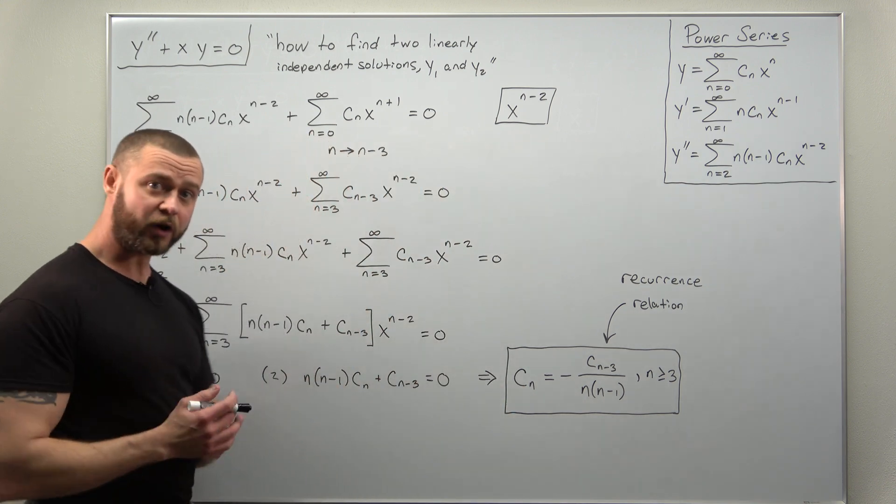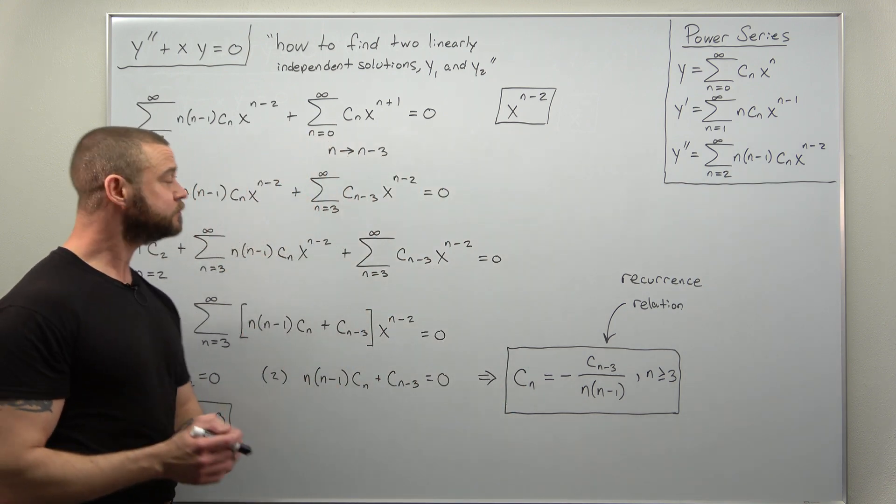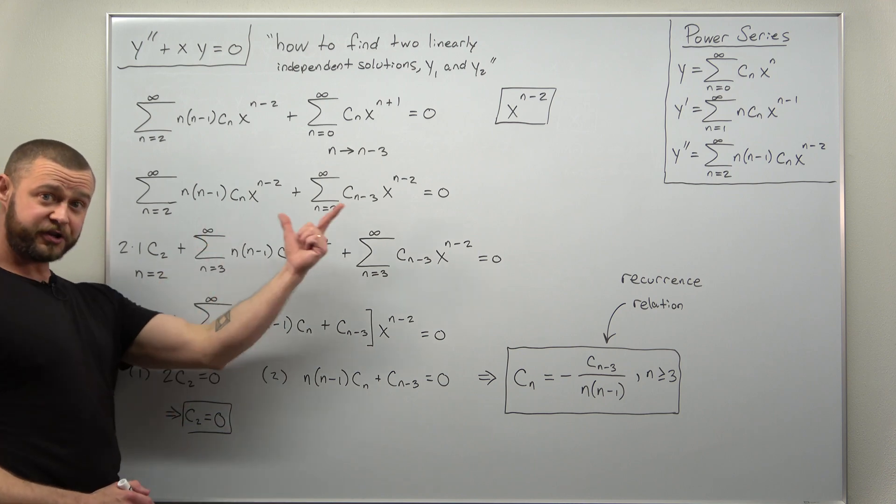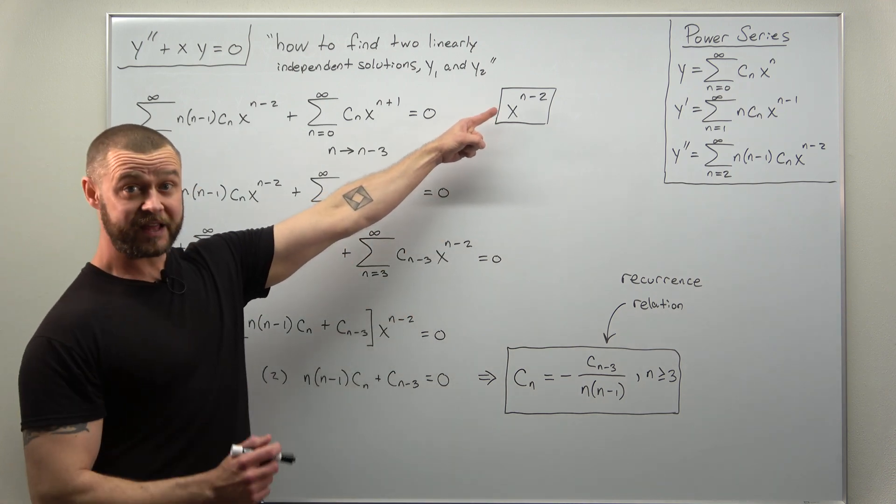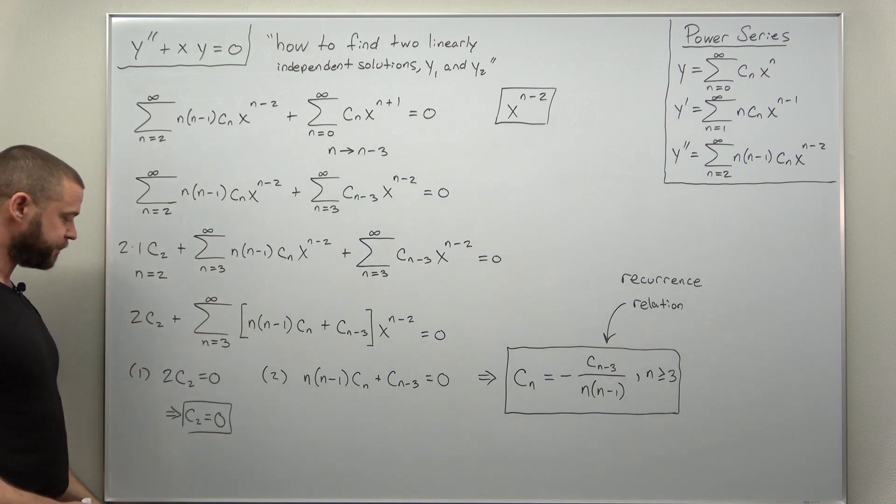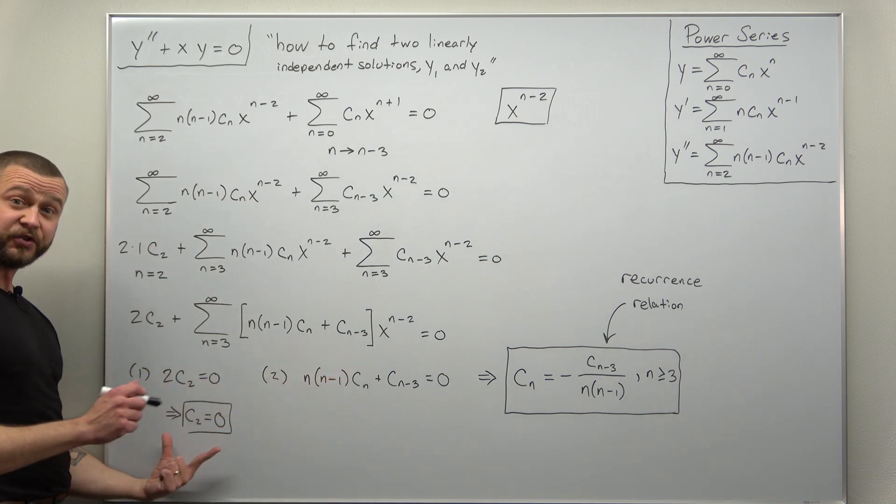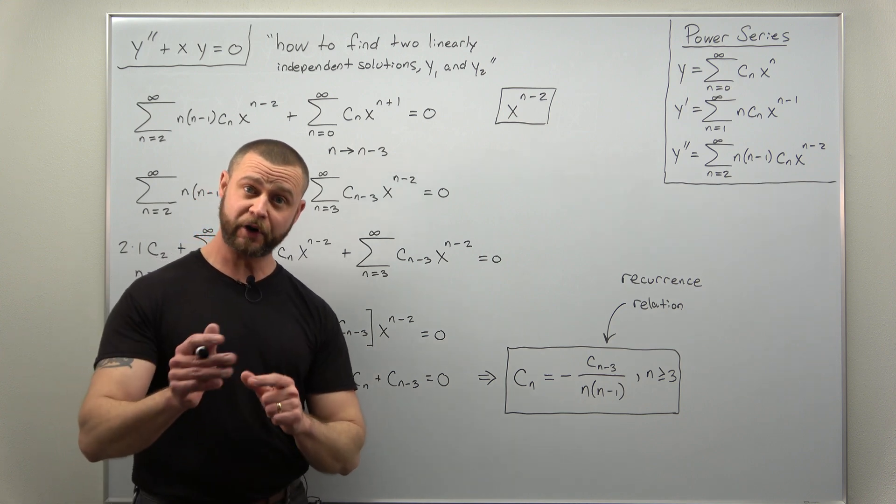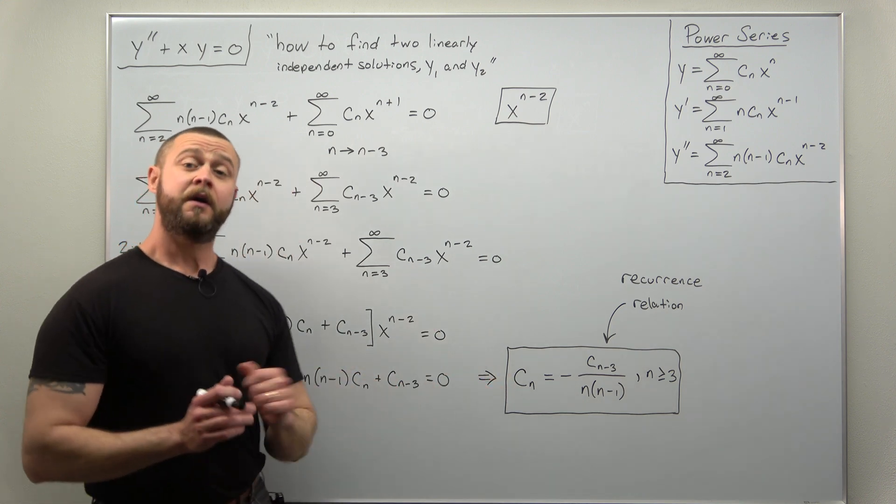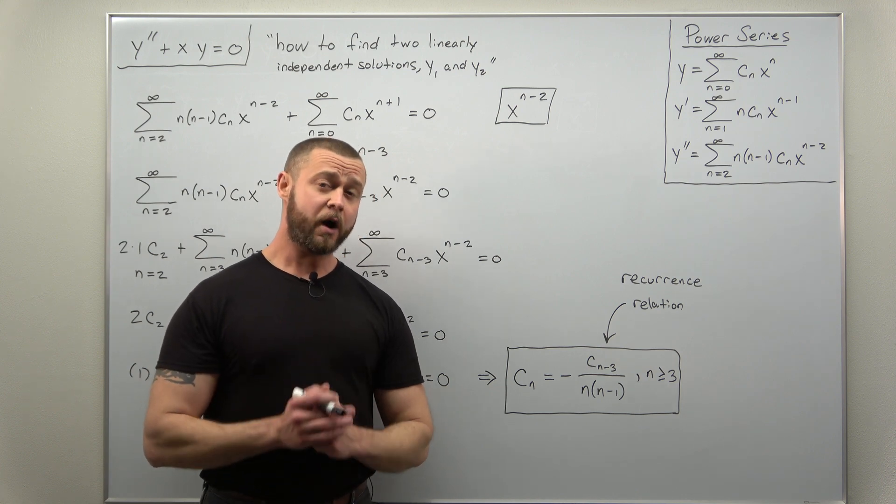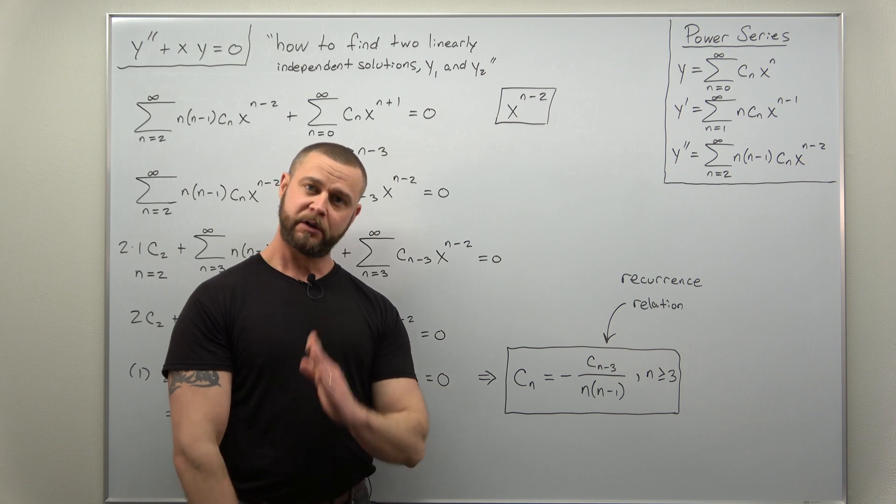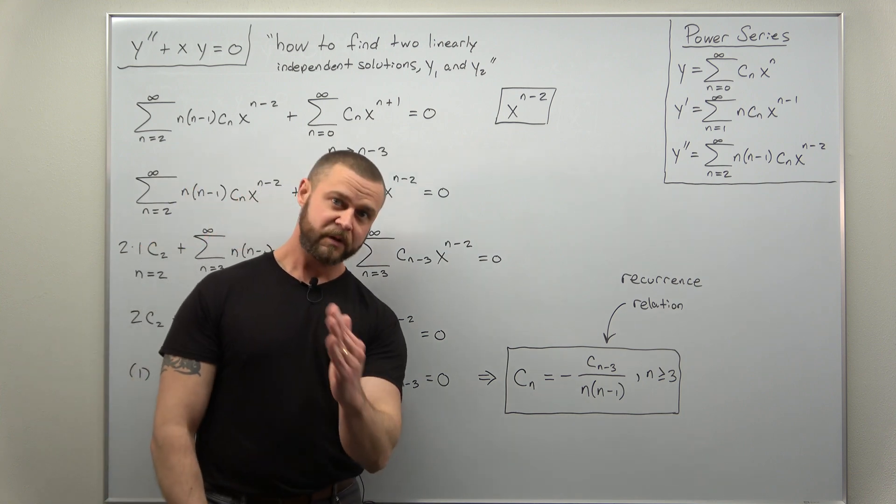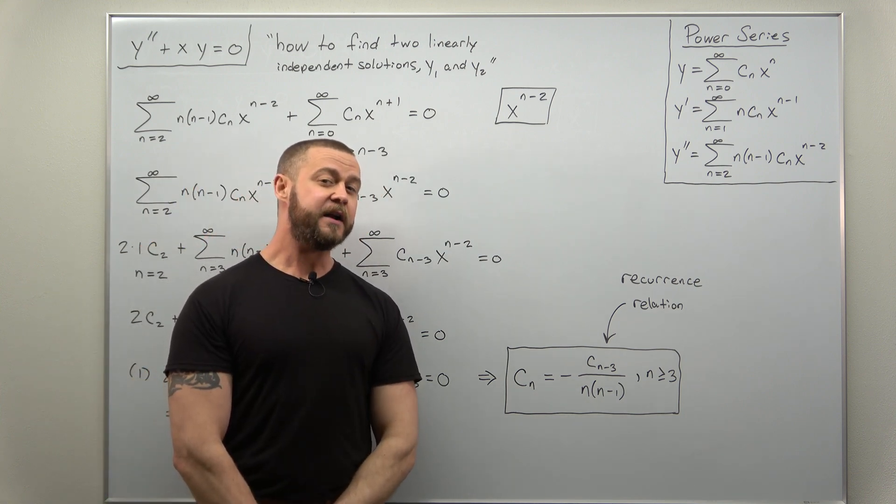Now make sure you're comfortable going through the work here. Pause the video, work this out if needed. Very straightforward from our previous problems. We get two conditions here using a combination of shifting indices, shifting everything to x to the n minus 2, as well as writing out terms. We get these conditions that c2 equals 0, and more importantly, our recurrence relation. That is going to be where this video starts from - how we use this to figure out what y1 and y2 are, our two linearly independent solutions.